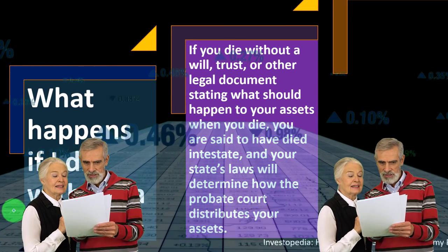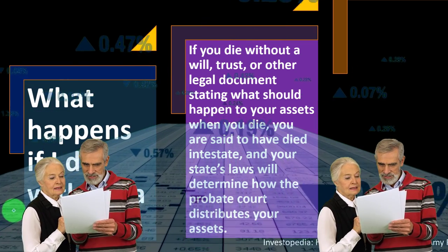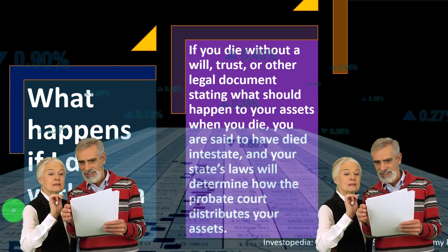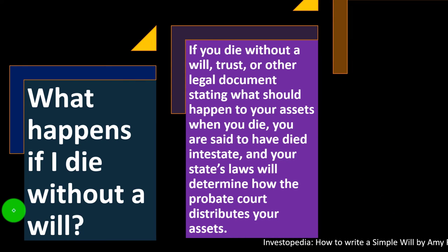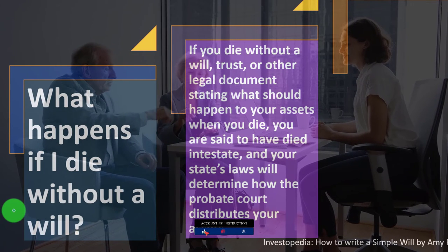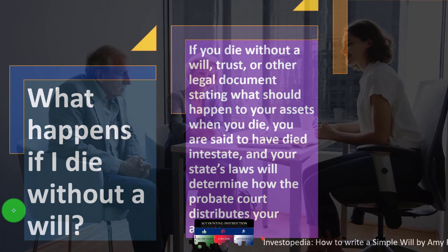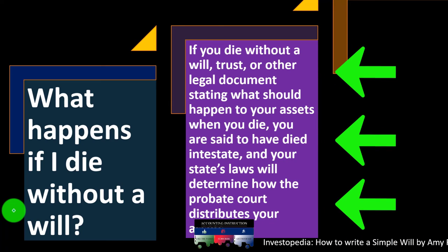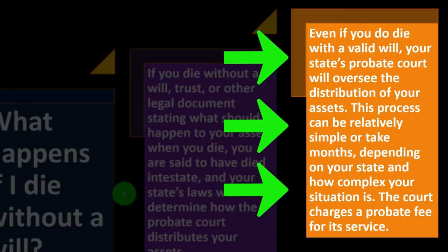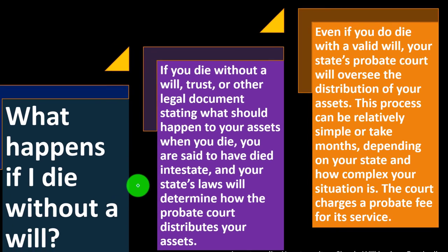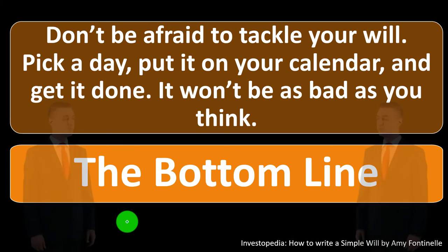What happens if you die without a will? Most likely some chaos, depending on how many assets and liabilities you were managing. If you die without a will, trust, or other legal documents, you are said to have died intestate, and your state's law will determine how the probate court distributes your assets. Even if you die with a valid will, your state's probate court will oversee the distribution, and this process can be relatively simple or take months depending on your state and the complexity of your situation. The court charges a probate fee for its services.